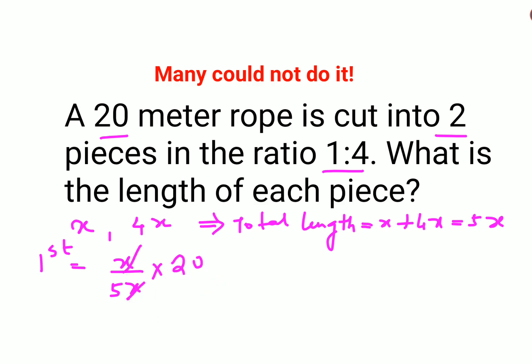So this and this gets cancelled, and this is 1x and 4x, so we can say that this first part of the rope will be 4 meters.